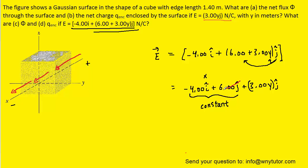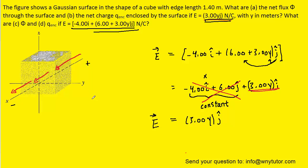We only need to consider the variable component, which is 3.00y j-hat — exactly the same electric field as in parts A and B. Therefore, the answers to parts C and D are identical to parts A and B, because the only contributing variable electric field is the same in both halves of the problem.